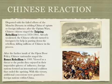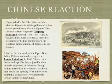After the further insult of the Open Door Policy, Chinese nationalists staged the Boxer Rebellion in 1900. Viewed as a threat to the profits they enjoyed in their imperialist spheres of influence, foreign nations formed an international coalition that ended the uprising. With this victory, additional concessions were granted to foreign nations within China.